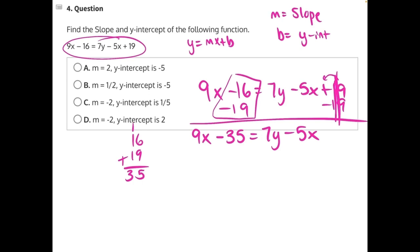Next, we should get rid of this 5x. It's being subtracted, so once again, we'll need to add to both sides. I'll put it over here so that it's underneath its like term 9x. 9x plus 5x will give us 14x minus 35 equals 7y.